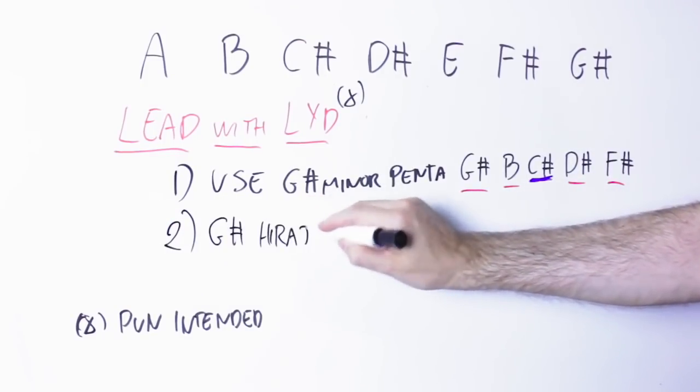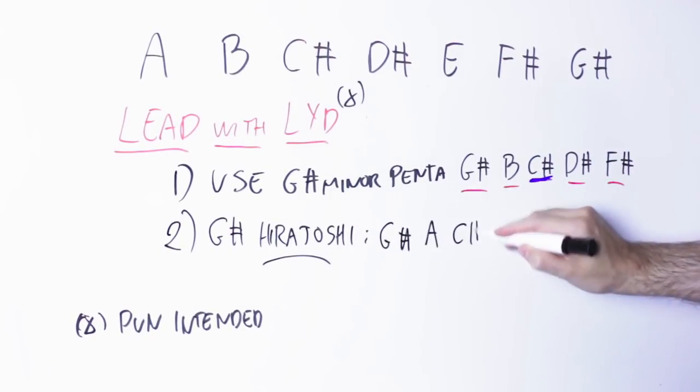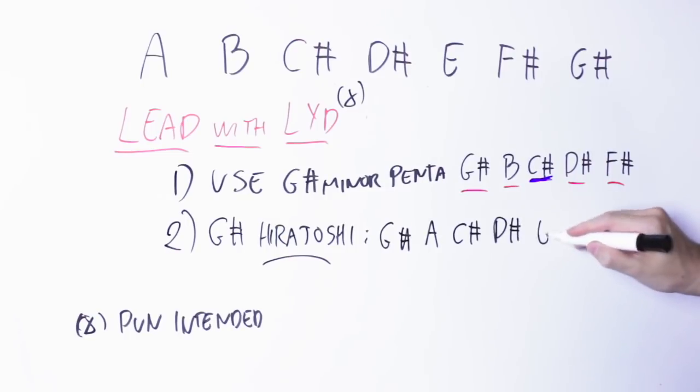Another option for the A Lydian scale, or the A chord, is to use the G sharp Hirajoshi scale. The Hirajoshi scale has notes G sharp, A, C sharp, D sharp, E. Or if you prefer, that's just the A major arpeggio, A, C sharp, E, with the major 7, G sharp, and the sharp 4th, D sharp.